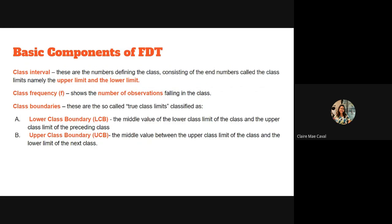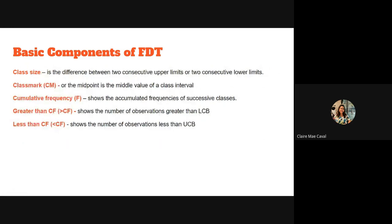These are the basic components of a frequency distribution table. You may take a picture of this slide. The basic components are: class interval, class frequency, and class boundaries — which can be lower class boundary and upper class boundary. You also have the class size, greater than cumulative frequency, and less than cumulative frequency.